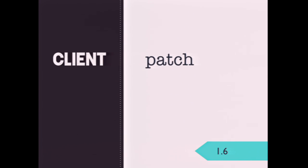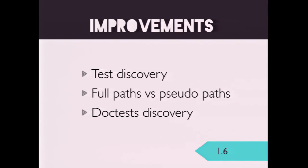In 1.6, PATCH is added to the list of client HTTP methods. We also get a new test runner able to locate tests not only in models.py and tests.py but anywhere from the installed apps as long as it matches specific file patterns. New test discovery means no more tests in models.py. Pseudo paths are removed — no more app.testclass.testmethod — replaced with real filesystem dotted paths. This also allows running tests not inside a Django app listed in INSTALLED_APPS. And finally, doctests won't be discovered anymore.